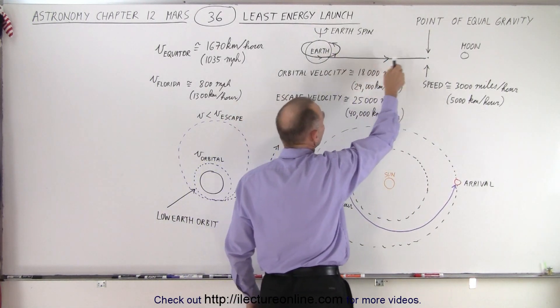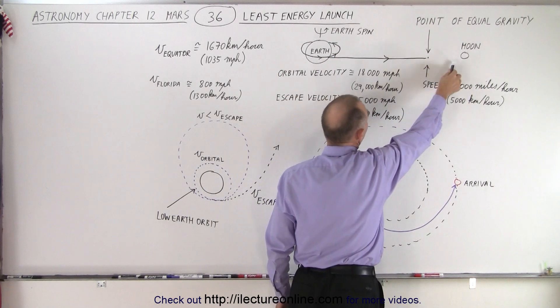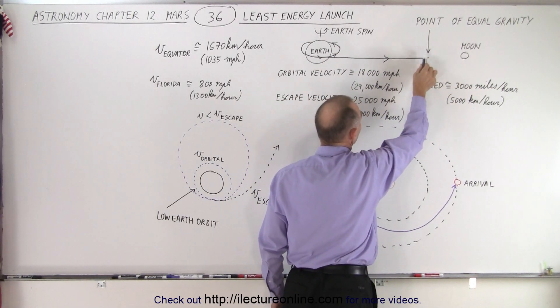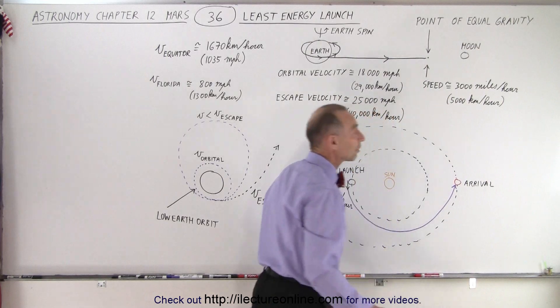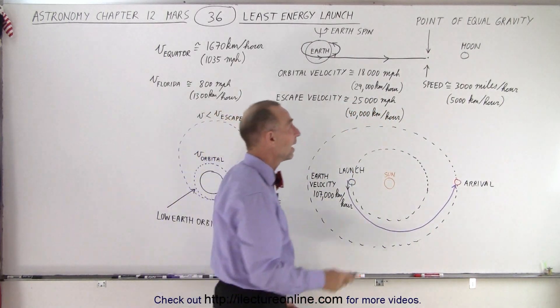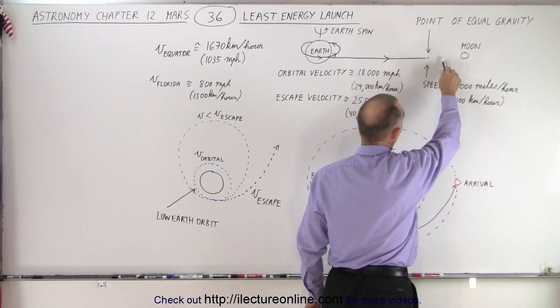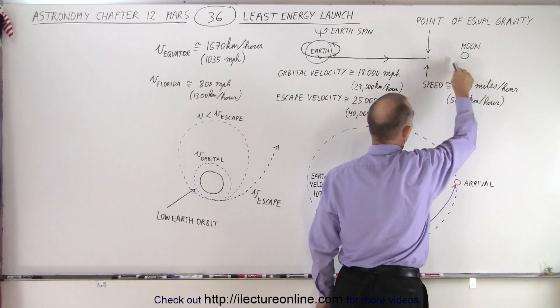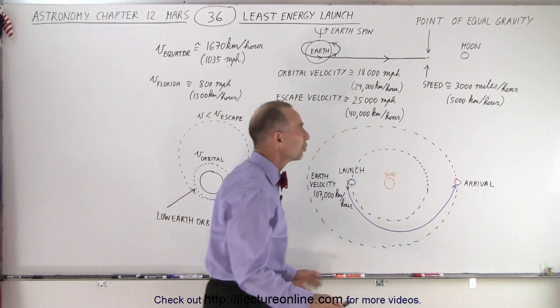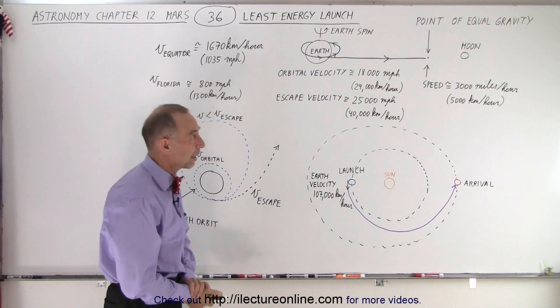By the time you get to the point where the gravitational force of the moon and the earth are equal to one another, the rocket will have slowed down to about 3,000 miles per hour. After that, the moon will start pulling on you more strongly, and you start picking speed up again. When you hit the moon, you're probably going about 5,000 miles per hour at that point.